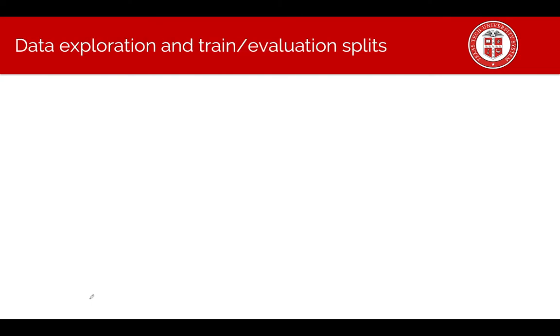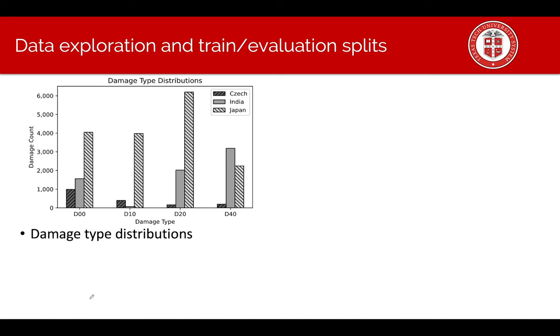The next step is data exploration and train evaluation splits. We first explore the damage type distributions and see they have different numbers of images per country and different damage type distributions per country.